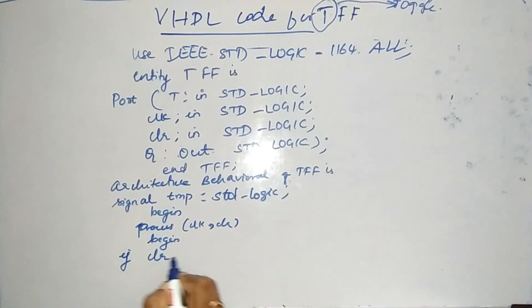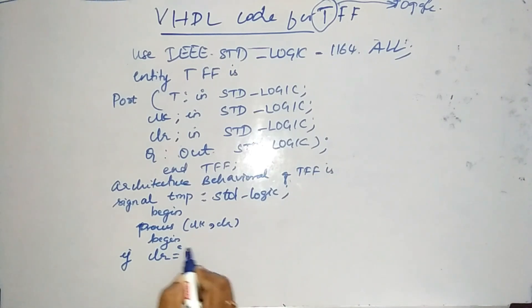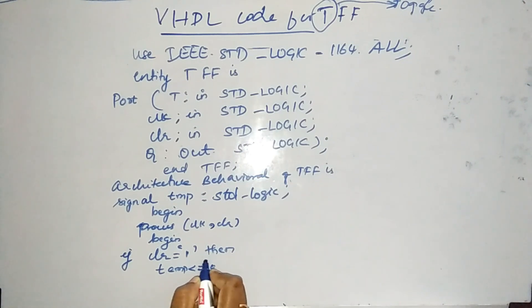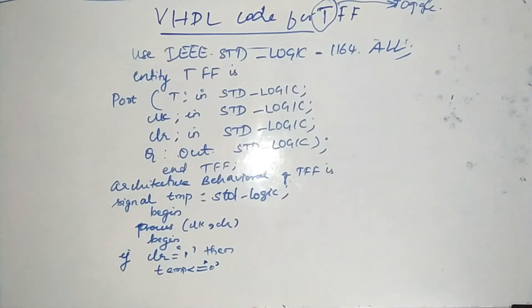So if clear is 1, if our reset is activated, then what happens? Our signal, temp signal, tends to be 0. So whenever the reset or the clear is 1, activated, our temp signal is going to be 0, this we already know.